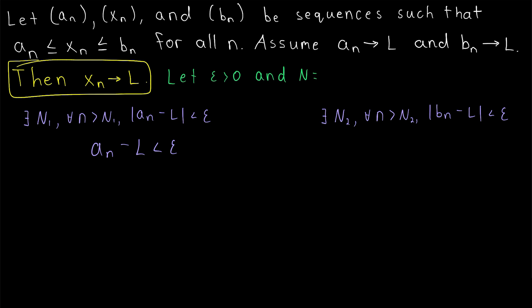This inequality is equivalent to dropping the absolute value bars. So we just have a_n minus L is less than epsilon, and then also attaching a greater than negative epsilon on the left end.